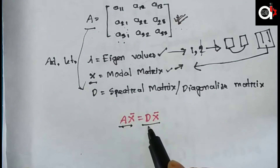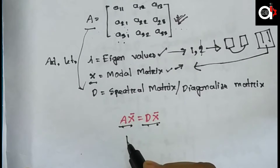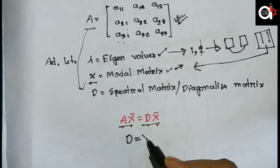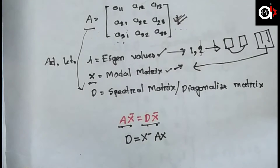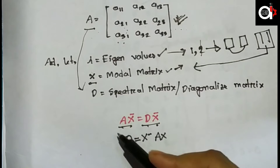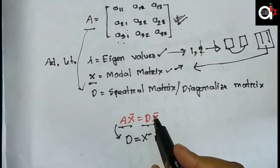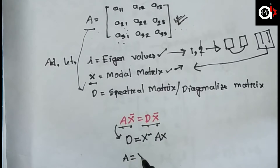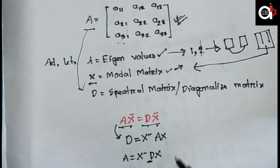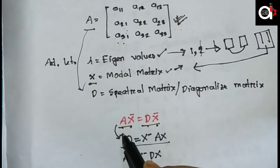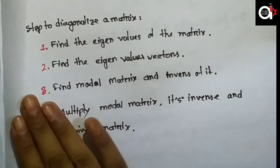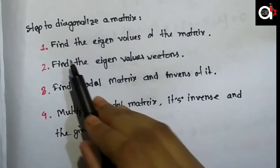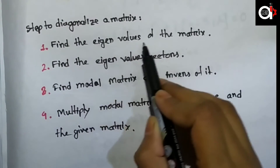We can write: A times the modal matrix X equals D times X. So D equals X⁻¹AX. This means we can write A in diagonal form, where the diagonal entries are the eigenvalues of matrix A.